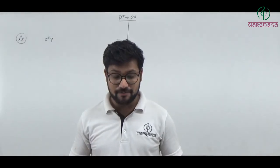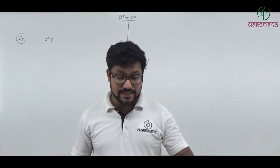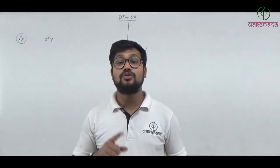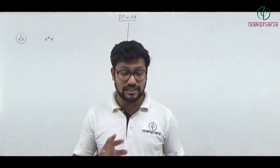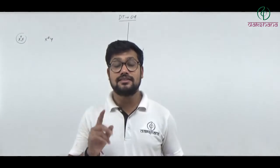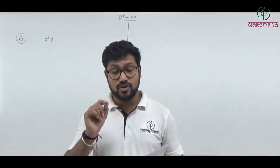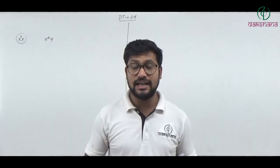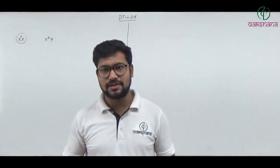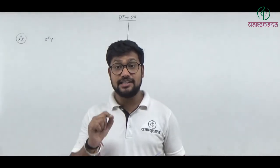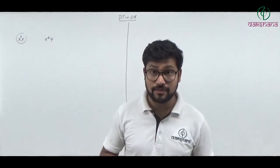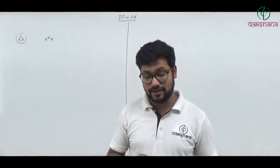Question number fifty-nine: Which acid occurs in semen? The options are citric acid, malic acid, oxaloacetic acid, and succinic acid. The acid present in semen is citric acid, which undergoes the Krebs cycle and helps in energy production. Citric acid is a part of the prostate gland secretion. Question number fifty-nine's first option — citric acid — is the right answer.